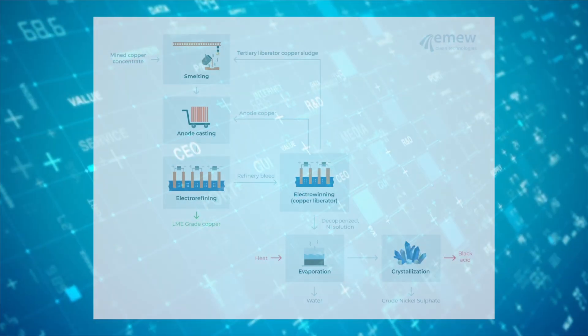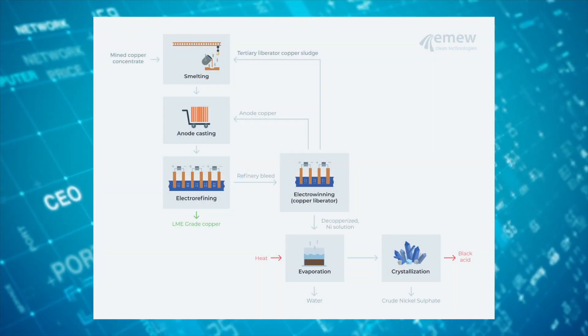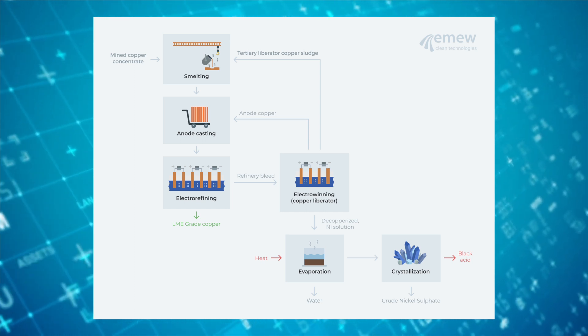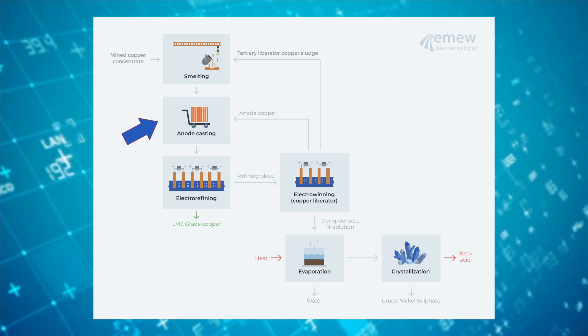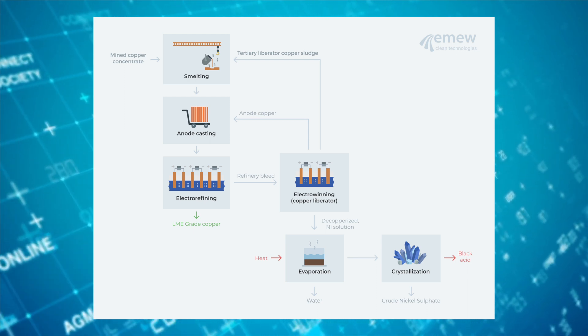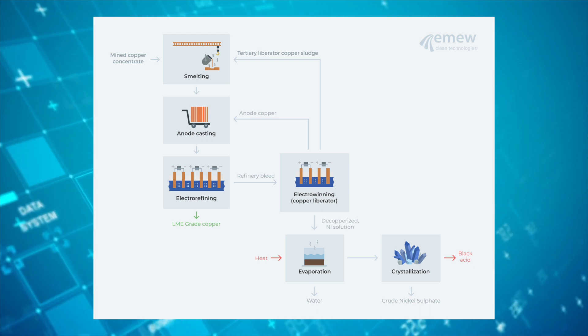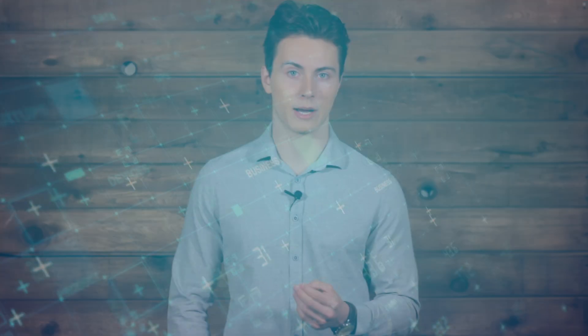Conventional electrowinning circuits are susceptible to impurities in the electrolyte such as arsenic, bismuth, antimony, etc., and therefore, as the copper is depleted from solution, the quality of copper cathode is compromised. A typical copper liberator circuit using conventional electrowinning produces anode-grade copper that is recycled back into the anode-casting furnace, while contaminated copper sludge is recycled back to the smelter. This results in a high circulating copper load in the integrated smelter refinery and high working capital.